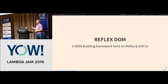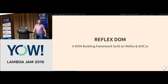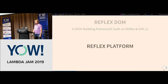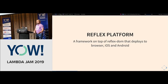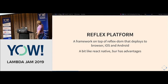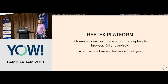Reflex-DOM is the DOM-building framework built on top of Reflex and GHCJS, which is a compiler from Haskell code down to JavaScript — it works really well. Later it will probably compile down to WASM but right now we're still targeting JavaScript. Then there's Reflex Platform, which is a framework on top of Reflex-DOM that gives a React Native-like experience: with the same UI you can deploy to the browser, iOS, and Android, but with more native code running on the device.